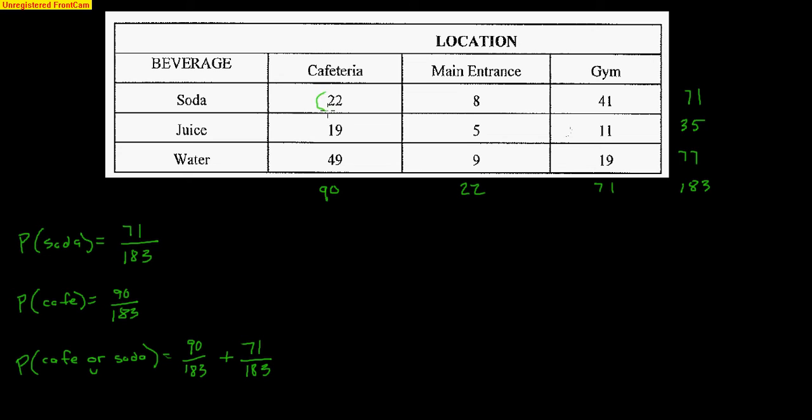But wait a minute, 22 students did both. 22 students were counted twice. So I do want to subtract those 22 out of 183 students away. Okay, that way they deserve to be counted, but they don't deserve to be counted twice. So that gives me a grand total of 139 out of 183.